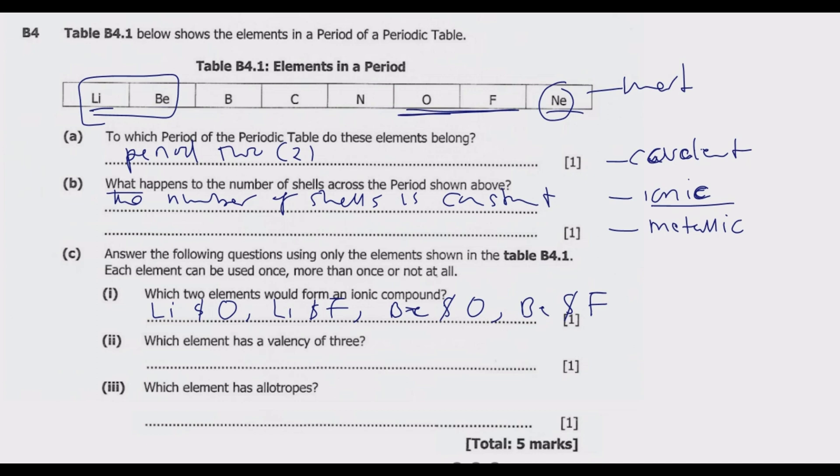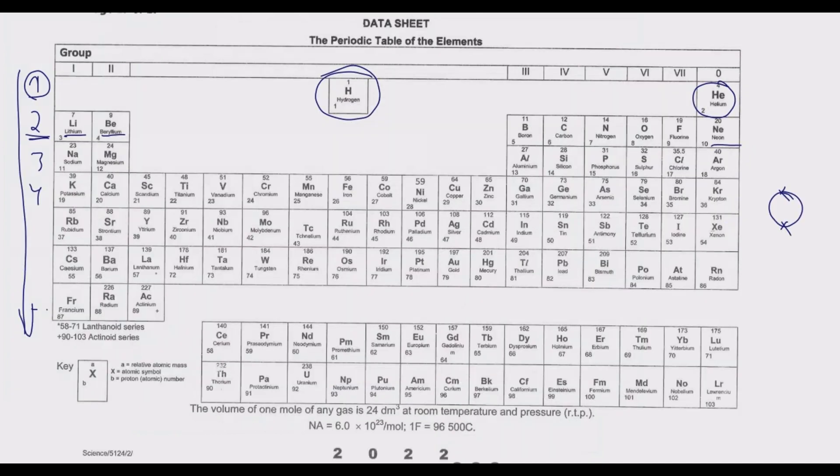Part C(ii): which element has a valency of three? When you're talking about valency, a valency is a number that tells us how many electrons an atom gains or loses or shares in forming a compound. We're going to go to the periodic table and check for the groups. Group 5 elements are able to gain five electrons to have a complete outer shell.